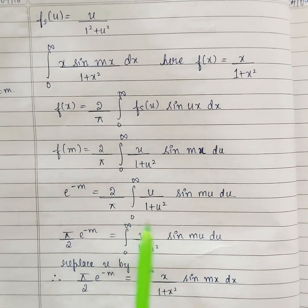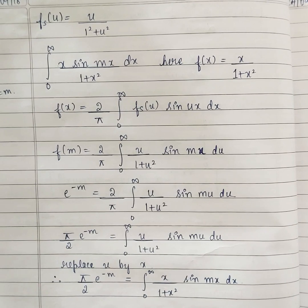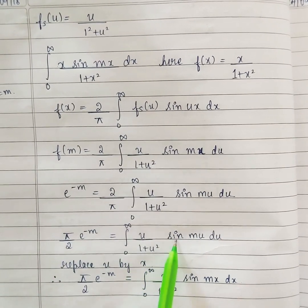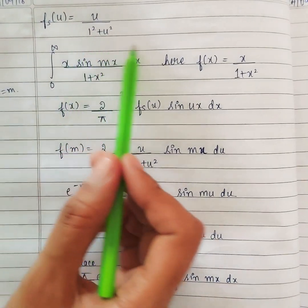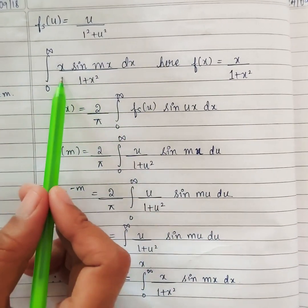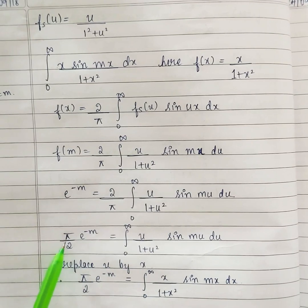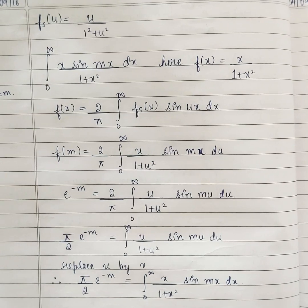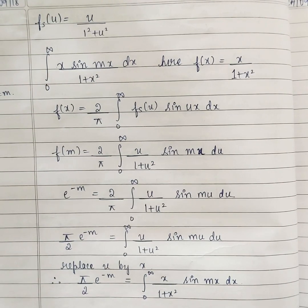Remember, whenever we have to find the integral we are not going to integrate it. We are just going to keep these terms as they are and push the rest of the terms to the other side. So u by 1 plus u square sine mu du — everything is the same, only in the place of u I have x. So what is the answer? Pi by 2 times e power minus m is the answer. The procedure is the same as Fourier transform, and if we have to find an integral we use inverse Fourier transform. Only the formula is different.